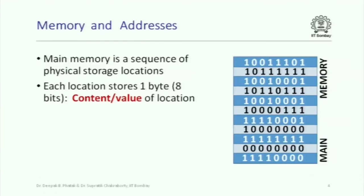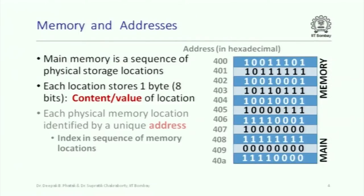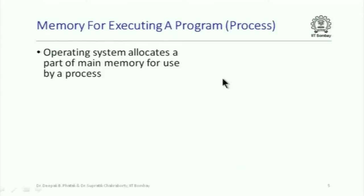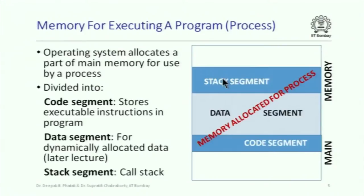What we are going to see in this lecture is how we can access memory locations through their addresses. Memory can be thought of as a sequence of locations and each location has some contents. Each location stores one byte — that is eight bits — and each location also has an address. The addresses are shown in hexadecimal. When a program is running, the operating system allocates a certain part of the memory for use by the program, and that memory is divided into three parts: the code segment, data segment, and stack segment.